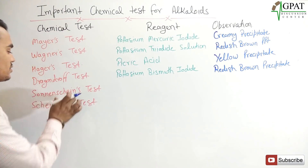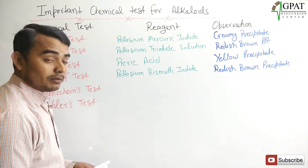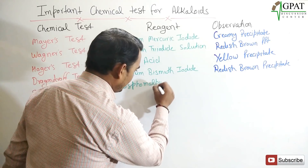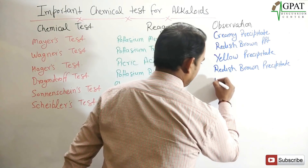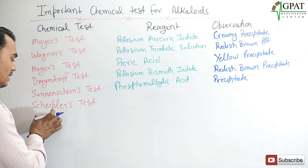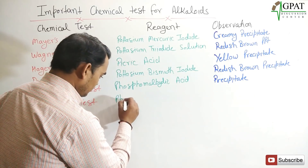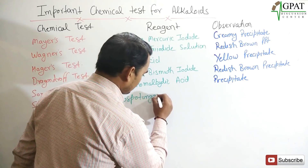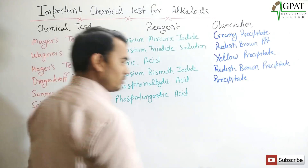The next test is Sonnenschein's test. In Sonnenschein's test, the reagent used is phosphomolybdic acid, and in the observation we find a precipitate. The next test is Sibler's test. In Sibler's test, the reagent used is phosphotungstic acid, and in the observation we also find a precipitate.